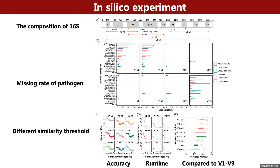We first evaluated the missing rate of pathogens for each variable region of 16S. Among them, V1 to V2, V1 to V3, and V6 to V9 performed the worst.